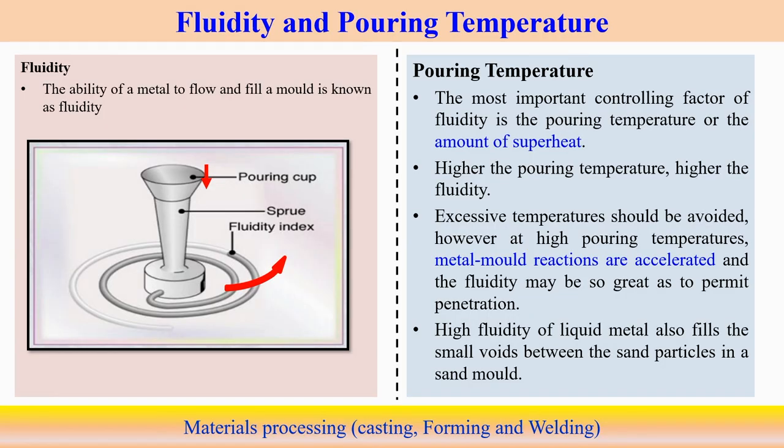Pouring temperature is very important. If there is too much superheating of the liquid metal, another problem arises: the entrapment of surrounding atmospheric gases, which can create defects in the casting. These two contradicting aspects lead us to measure the fluidity of the liquid metal, which indicates how quickly and efficiently it can fill the mold cavity.